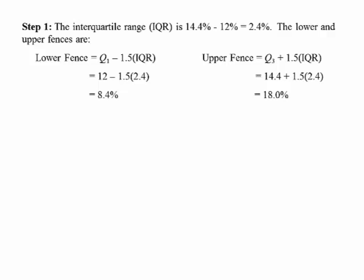The upper and lower fences are found by the following formulas. The lower fence turns out to be 8.4 percent. The upper fence, 18 percent.